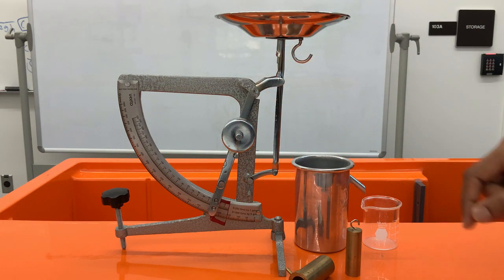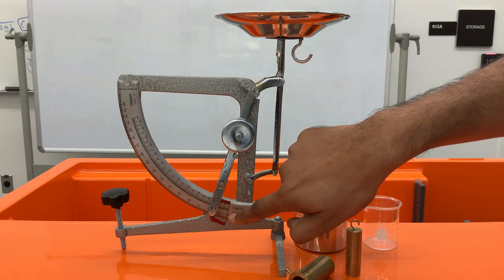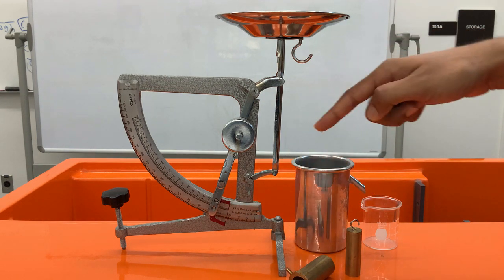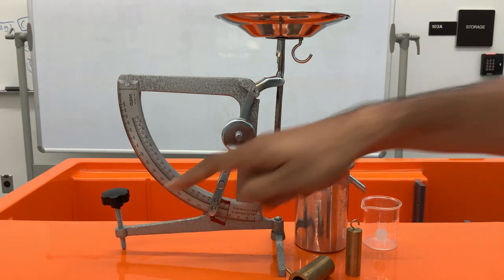We also have the anti-parallax cursor. We'll check whether the cursor is at zero to make it balanced. If not we have to use this topper to make it balance.